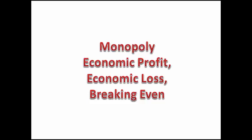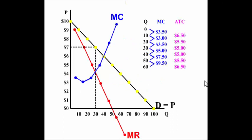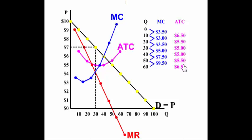Monopoly economic profit, economic loss, and breaking even. Shown is a graph of a monopoly where D is equal to P, but it's not equal to MR. The monopolist's profit-maximizing quantity is 30, because that's where MR is equal to MC, and the price is seven dollars. The average total cost curve slopes downward until it hits marginal cost, and beyond that point average total cost begins to climb.